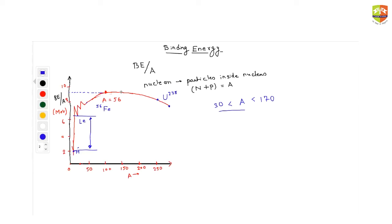These are direct observations from the graph, from which we can also derive conclusions. Let's write down the observations. The first observation is: binding energy per nucleon is approximately constant for mass numbers between 30 and 170.